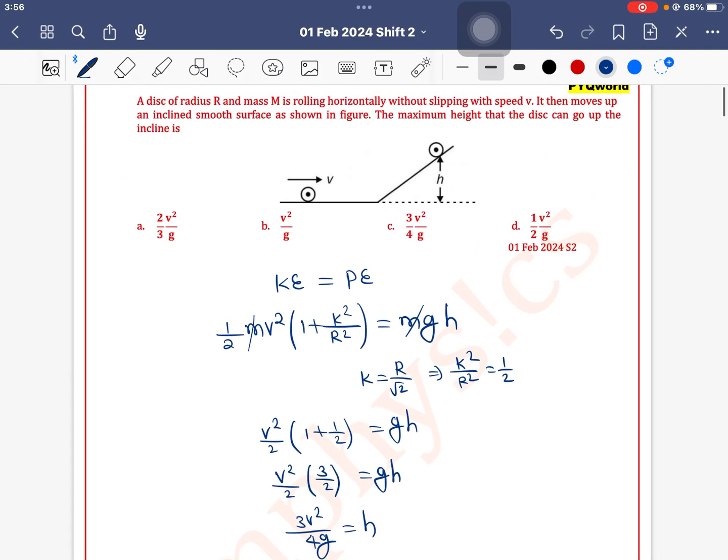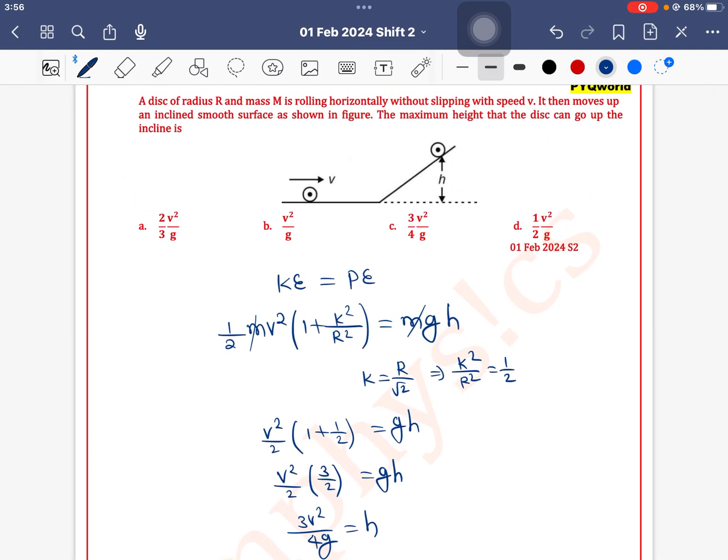Therefore, h = 3V²/4g. Option C is correct.